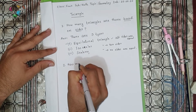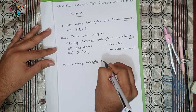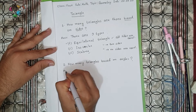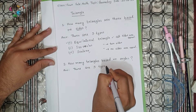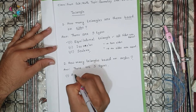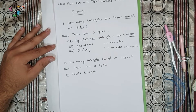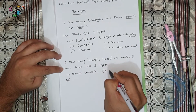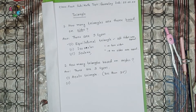How many triangles are there based on angles? The answer is there are also three types of triangle based on angles. Number one is the acute triangle. If all the angles of a triangle are less than 90 degrees, then it is called an acute triangle.